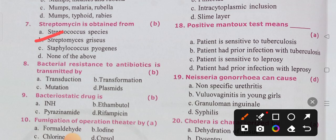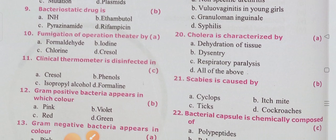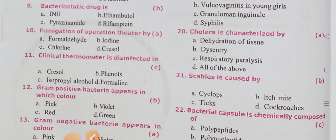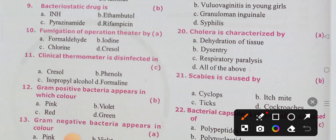Bacterial resistance to antibiotics is transmitted by transformation. Bacteriostatic drugs — option B is the correct answer.